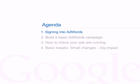Let's have a look at the agenda for this class. First, we'll quickly show you how you can sign into AdWords and what to do if you forget your sign-in details. Next, we'll show you how to build a basic AdWords campaign. Even if you've already created one, it will be useful to review what makes a successful AdWords campaign. After that, we'll take a look at how you can check that your AdWords ads are running properly.